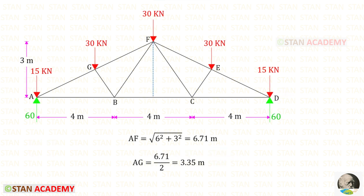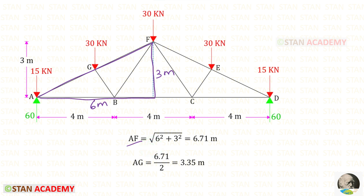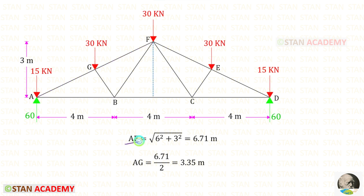We need to find the length of AF. Let us take this triangle and apply the Pythagorean theorem. Here we have 6 meters and here we have 3 meters, so AF will be equal to the root of 6 squared plus 3 squared. For AF we will get 6.71 meters. We know that the lengths of AG and GF are the same, so to find AG we divide 6.71 by 2, giving us 3.35 meters.